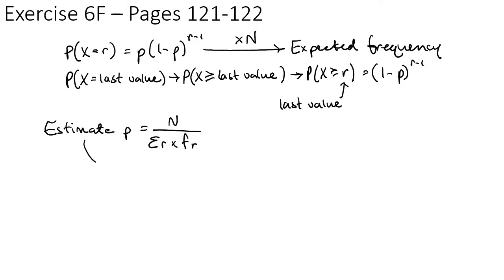And then when we estimate P, we know that the number of degrees of freedom is going to be the number of cells minus 2.